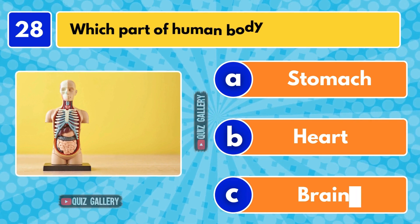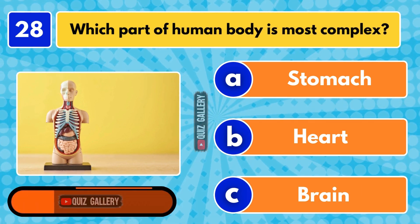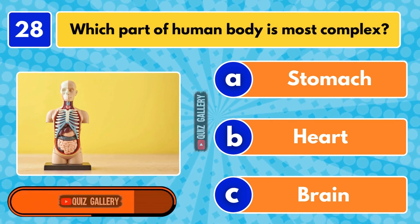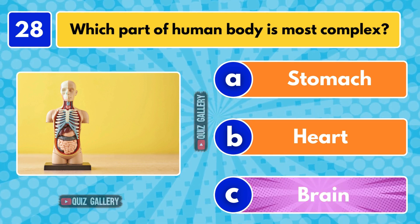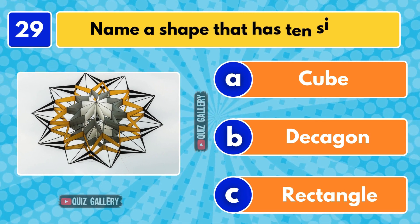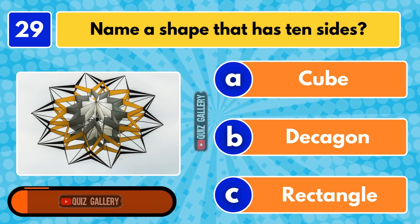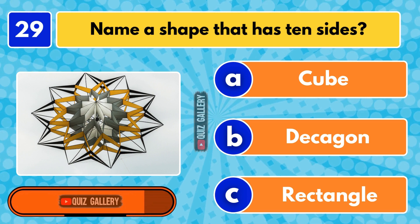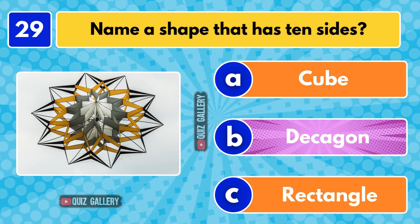Which part of the human body is most complex? Brain. Name a shape that has 10 sides. Decagon.